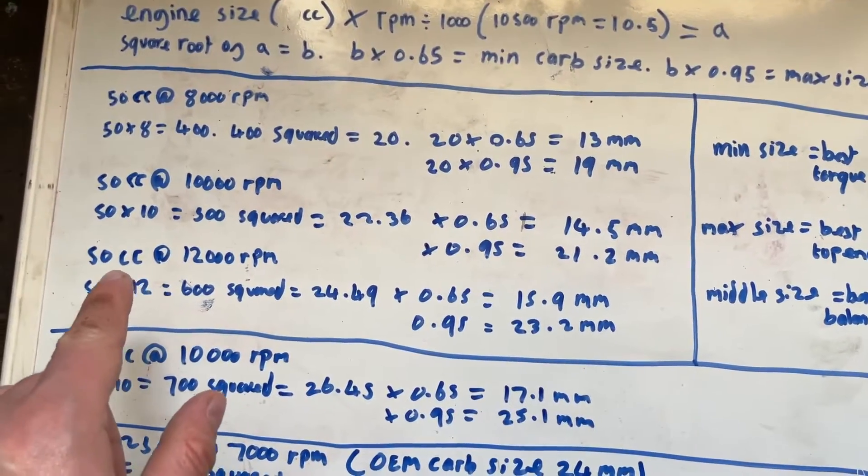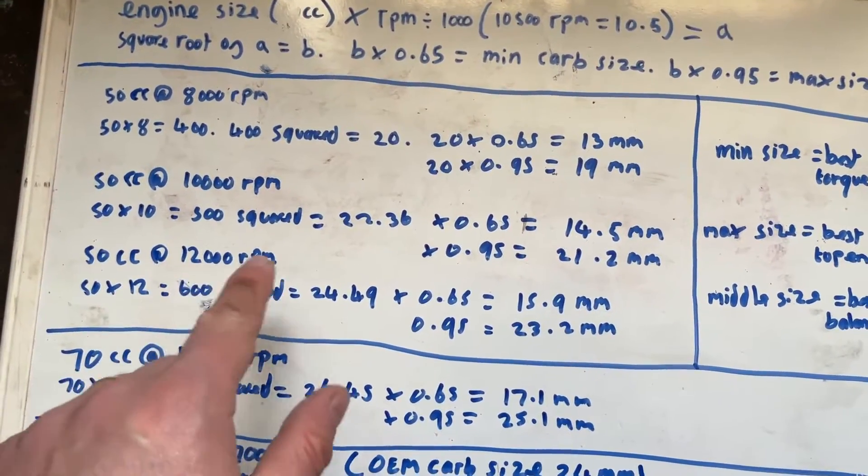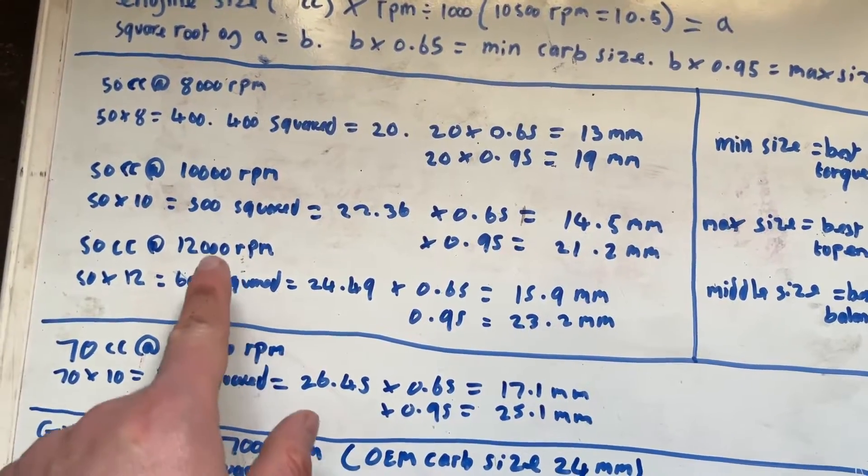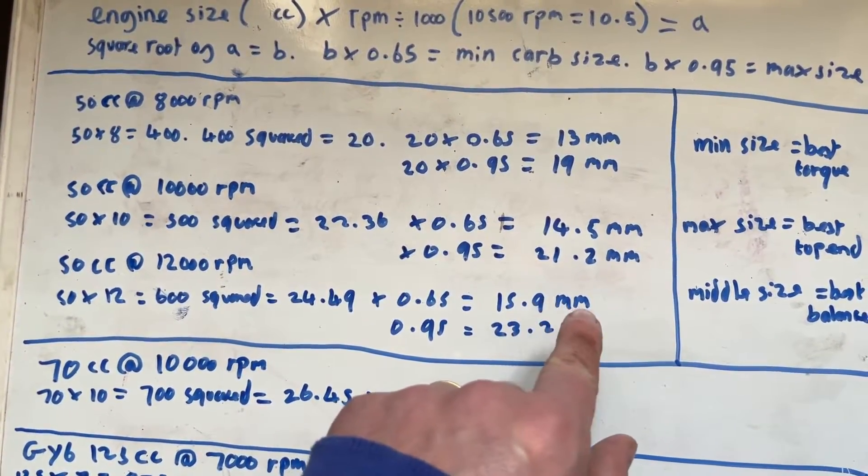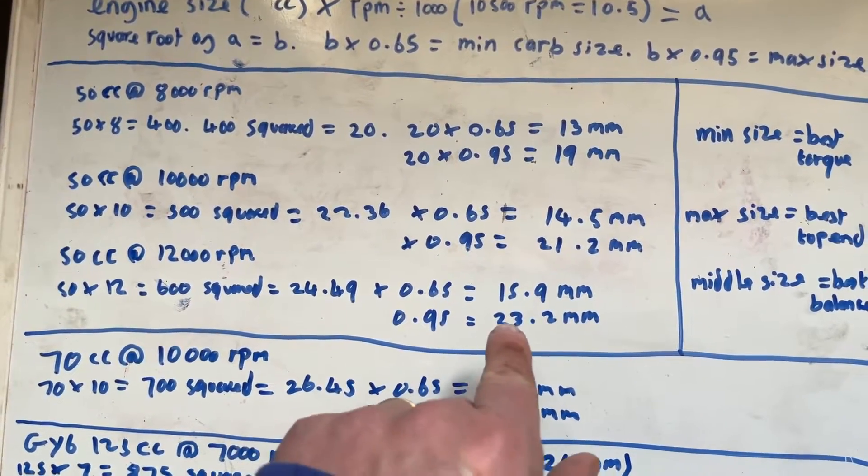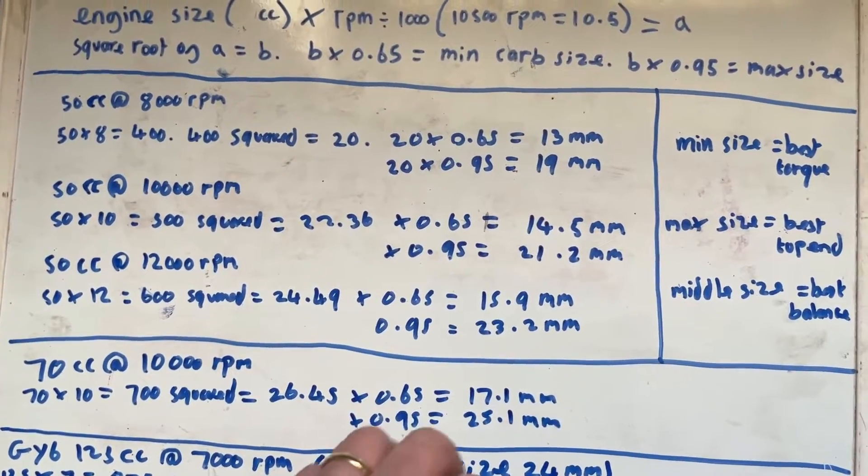So again, if we go to 50cc at 12,000 RPM, we're proper racing mode now. Minimum is going to be basically nigh on 16 millimeters and your maximum is going to be 23.2, give or take.